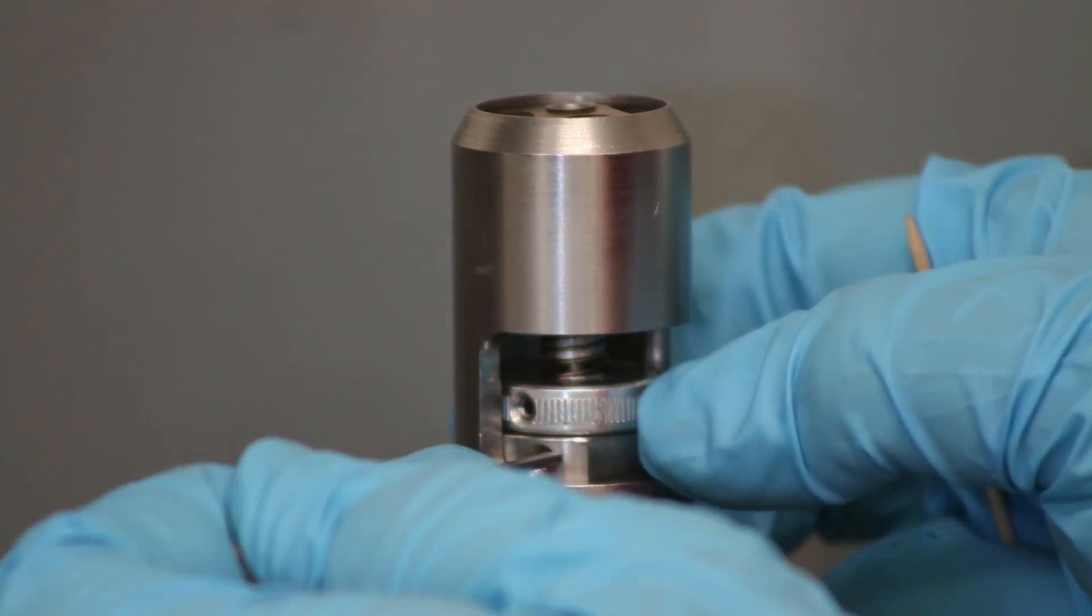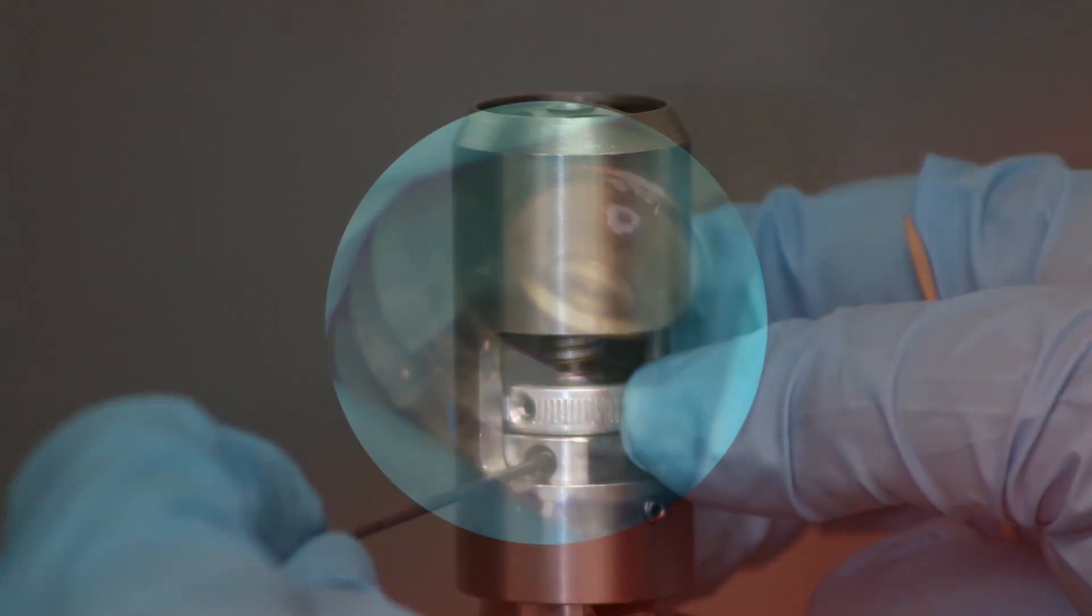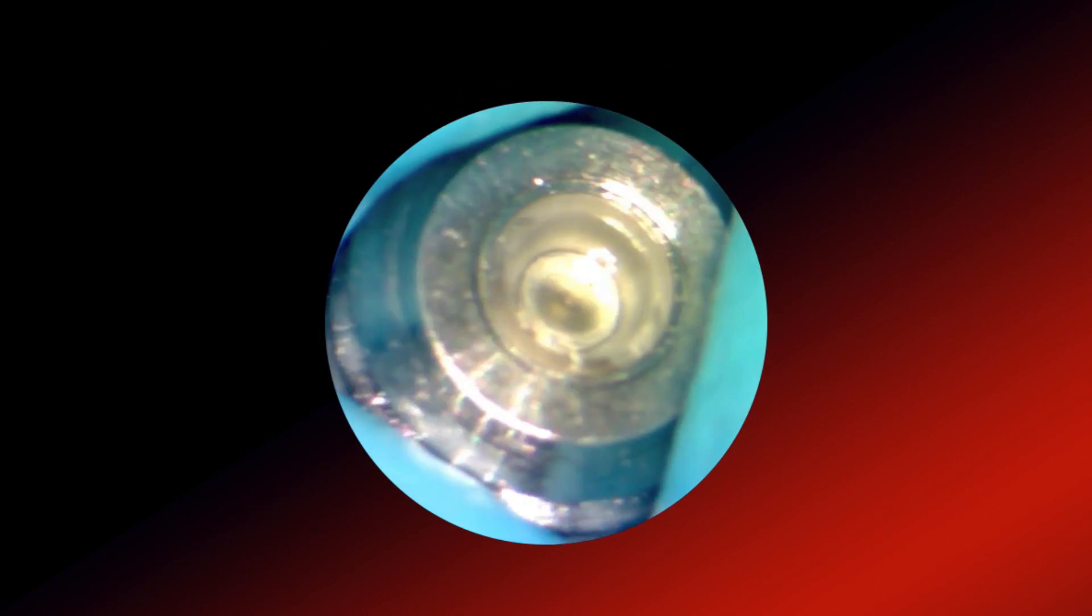The rheometer uses a magnetic sensor to detect the motion of a jewel-mounted torsion assembly in the test cell.